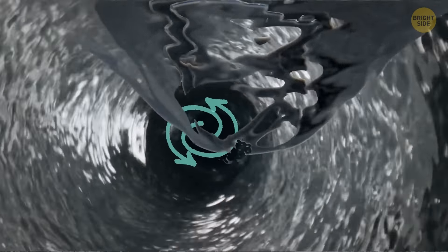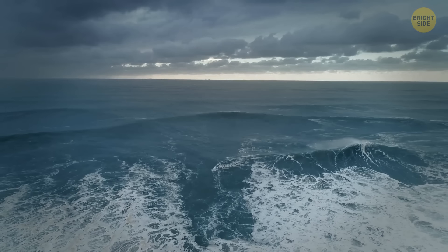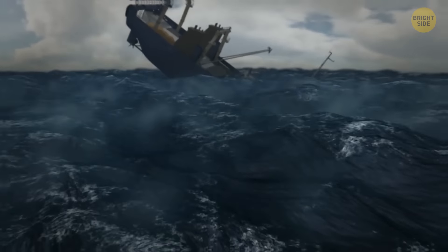Two streams of water swirl around each other and move down in a spiral, creating an empty space in the center. Most of the whirlpools are too small and don't pose a danger. But if the water vortex is strong and large, it can sink ships.